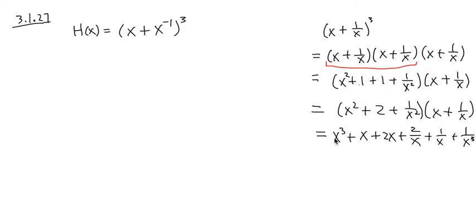x to the third power, because x to the second power times x is x to the third power. x to the second power times 1 over x, we get x. And then 2 times x, we get 2x. 2 times 1 over x, we get 2 over x.